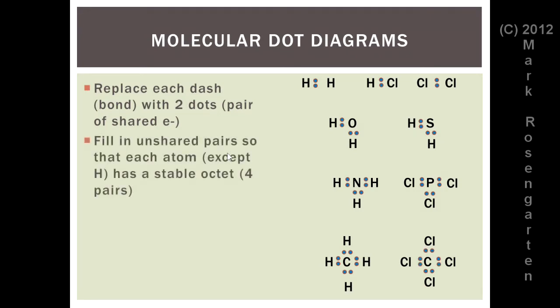Fill in the unshared pairs so that each atom, except for hydrogen, has a stable octet of eight valence electrons — that's four pairs. Hydrogen can only have two electrons since it has only one energy level. In HCl, the hydrogen can only have two electrons. The chlorine has one shared pair and needs three unshared pairs to make a stable octet. In diatomic chlorine, each atom has one shared pair, requiring three unshared pairs each.